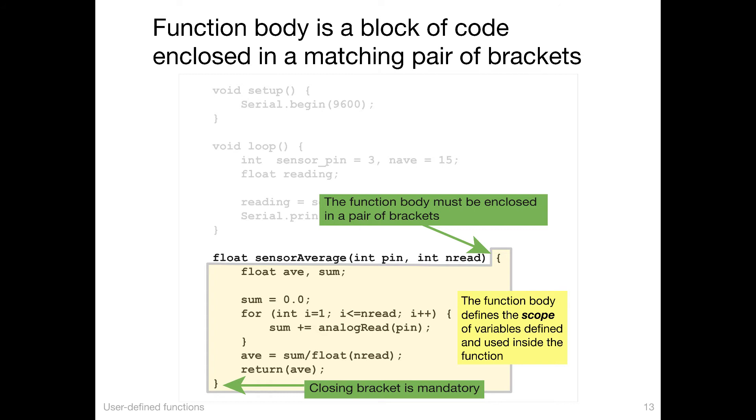In computer science, the function is said to have a scope. And inside that scope, variables can use each other and be combined with each other. So ave, sum, int i, int pin, int nread are all available inside the scope of sensorAverage.